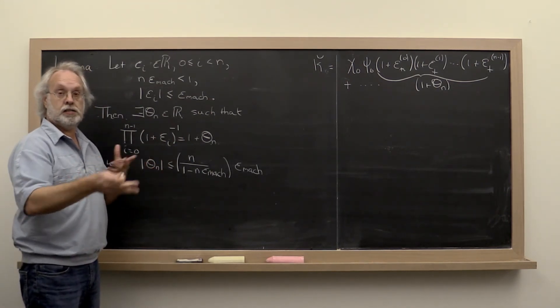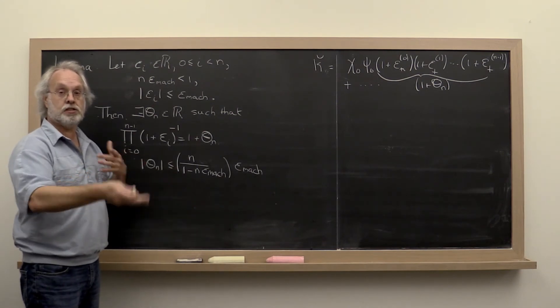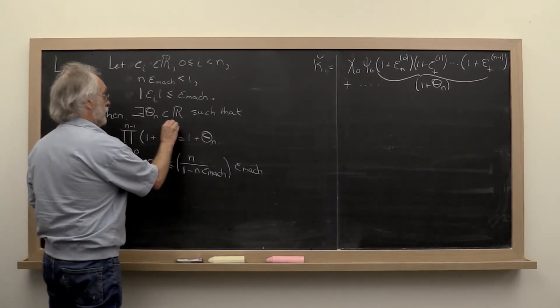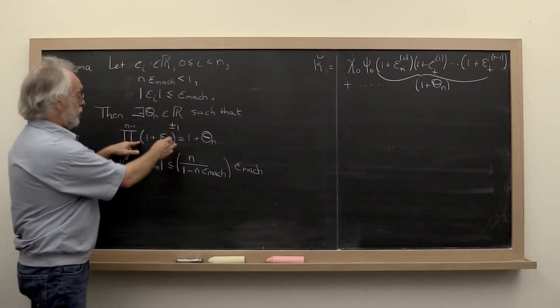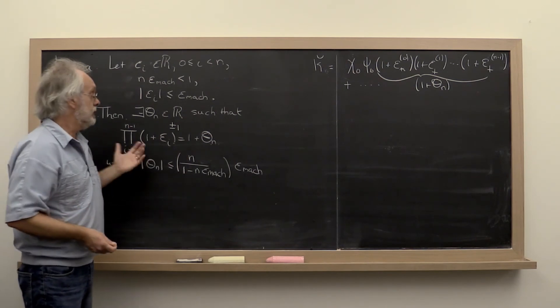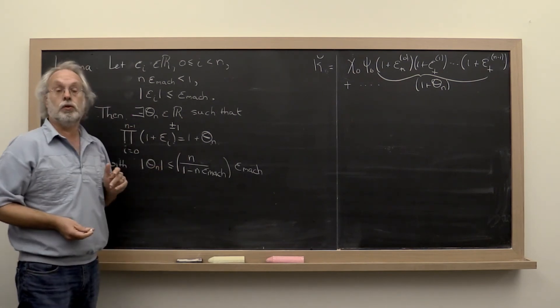And if your analysis is such that you have to mix and match the computational models, then actually you can show that if you have a product of a whole bunch of terms that either are multiplied or divided, then the result still holds.